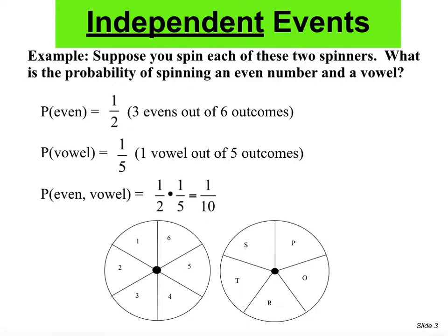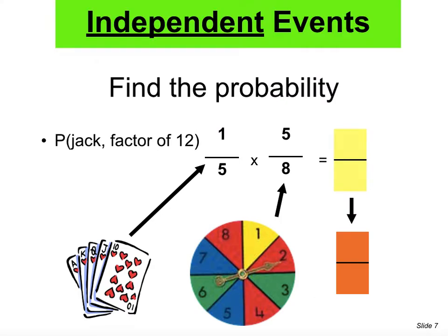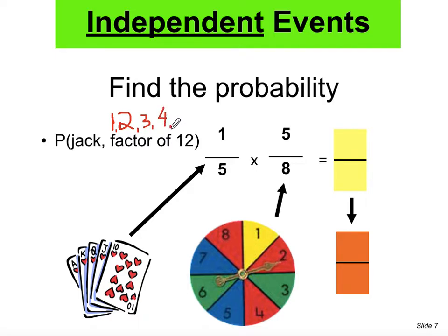Next example: find the probability of getting a jack from a deck of cards and a factor of 12 on a spinner with eight numbers. If you look at the cards, there are five hearts — all of them are hearts. The spinner has eight numbers. The factors of 12 are: 1, 2, 3, 4, and 6 — because 12 can be divided by each of those. 5 is not a factor, 7 is not a factor. So there are five factors of 12 out of eight possible outcomes on the spinner.